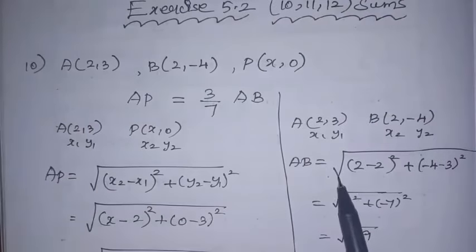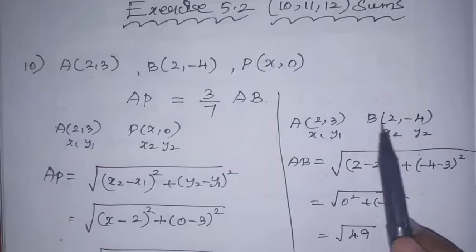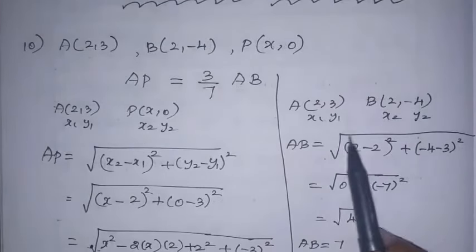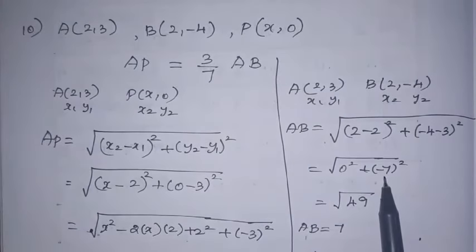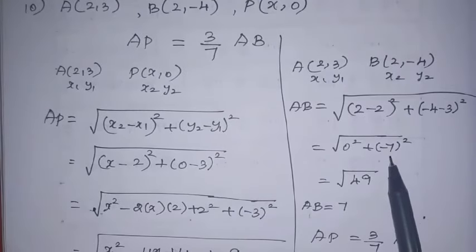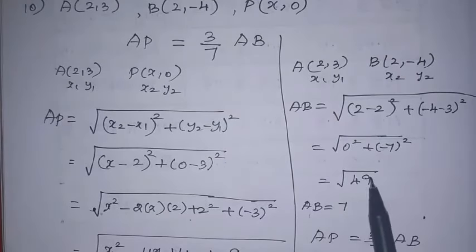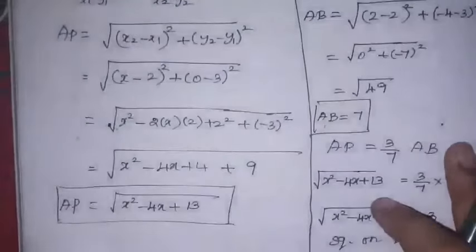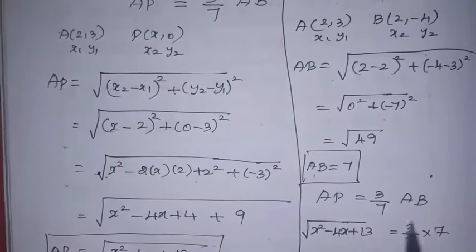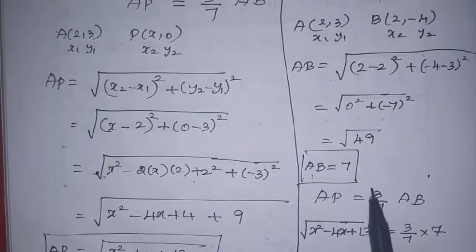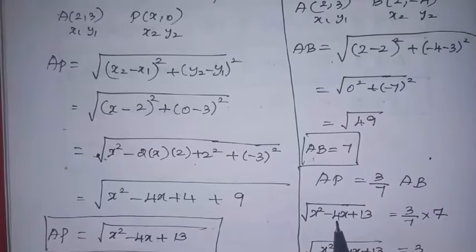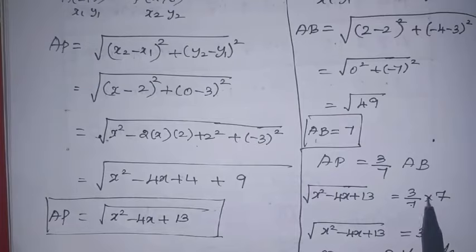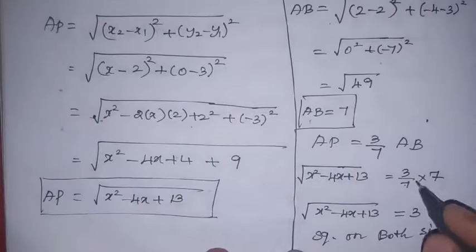Next, we find AB. With A as (2, 3) and B as (0, −4), substituting into the distance formula: AB = √[(0 − 2)² + (−4 − 3)²] = √[4 + 49] = √49, so AB = 7. Now, using the given relation AP = 3/7 × AB, we substitute: √(x² − 4x + 13) = 3/7 × 7.